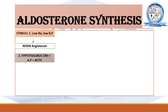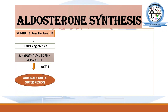ACTH, which is released from the anterior pituitary in response to corticotropin-releasing hormone, goes towards the outer region of the adrenal cortex — the zona glomerulosa — and activates the G-receptor protein. After that, cAMP is synthesized, which initiates protein kinase enzymes responsible for the activation and phosphorylation of various enzymes involved in the aldosterone biosynthesis pathway.